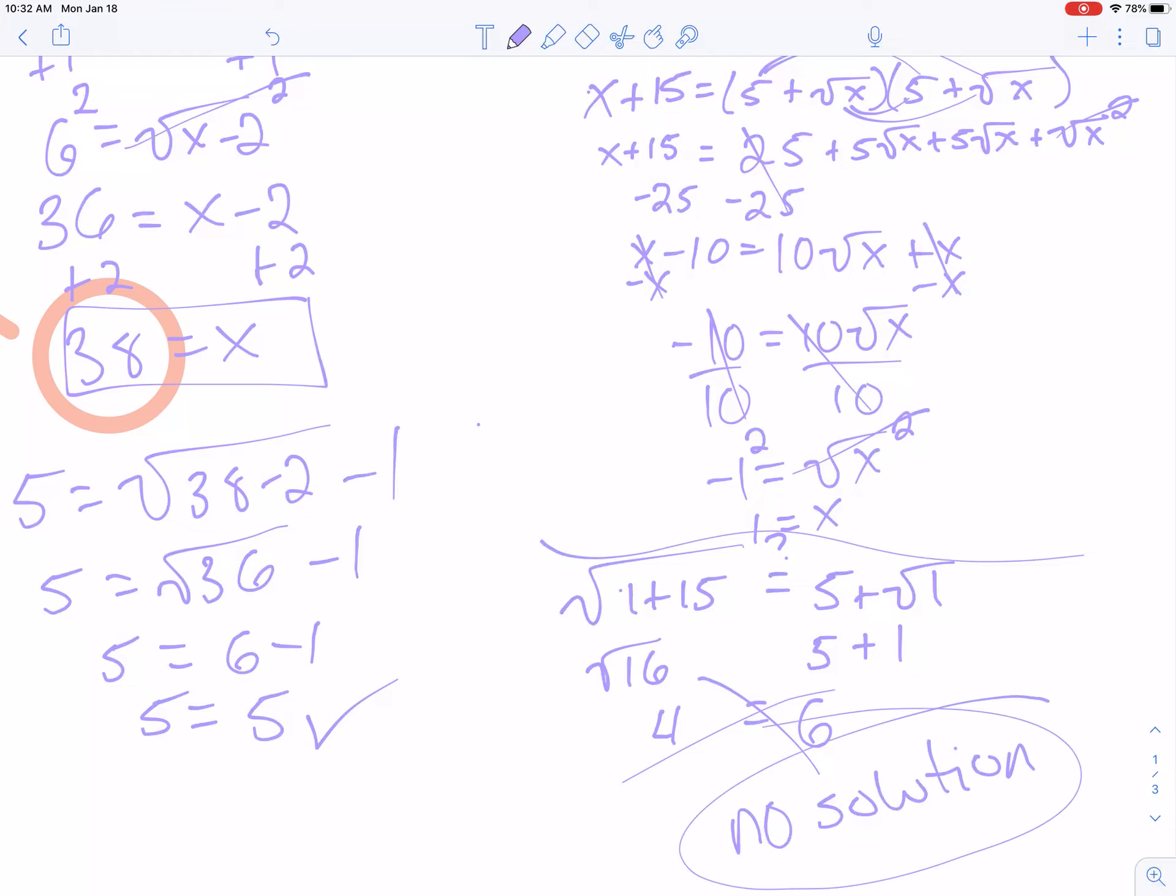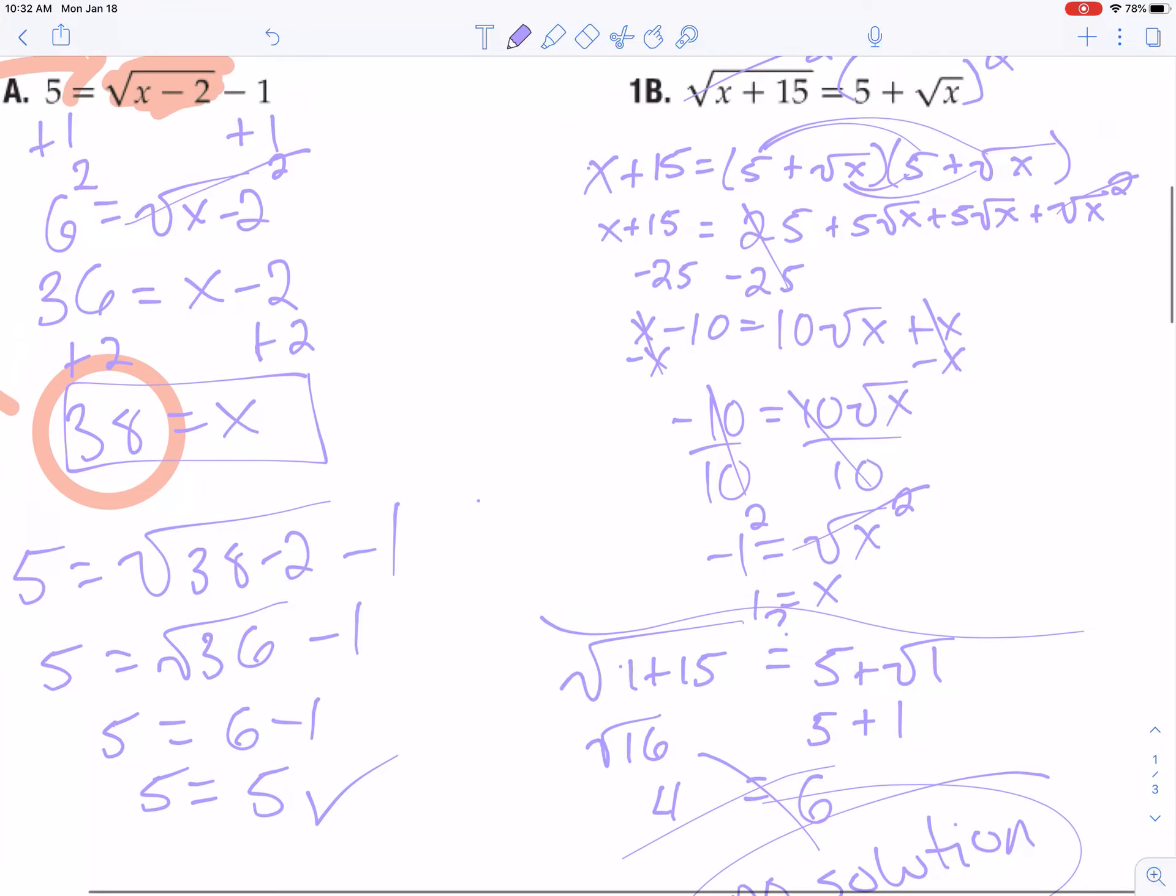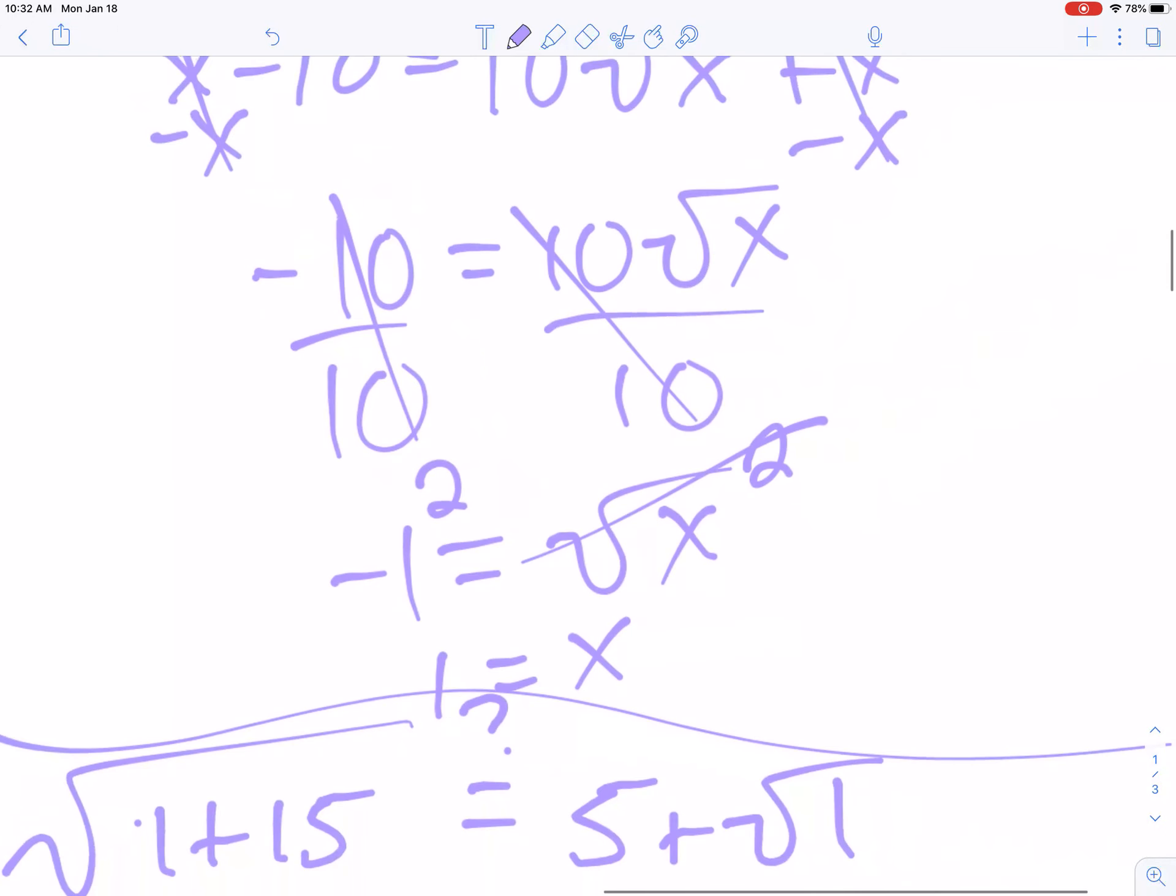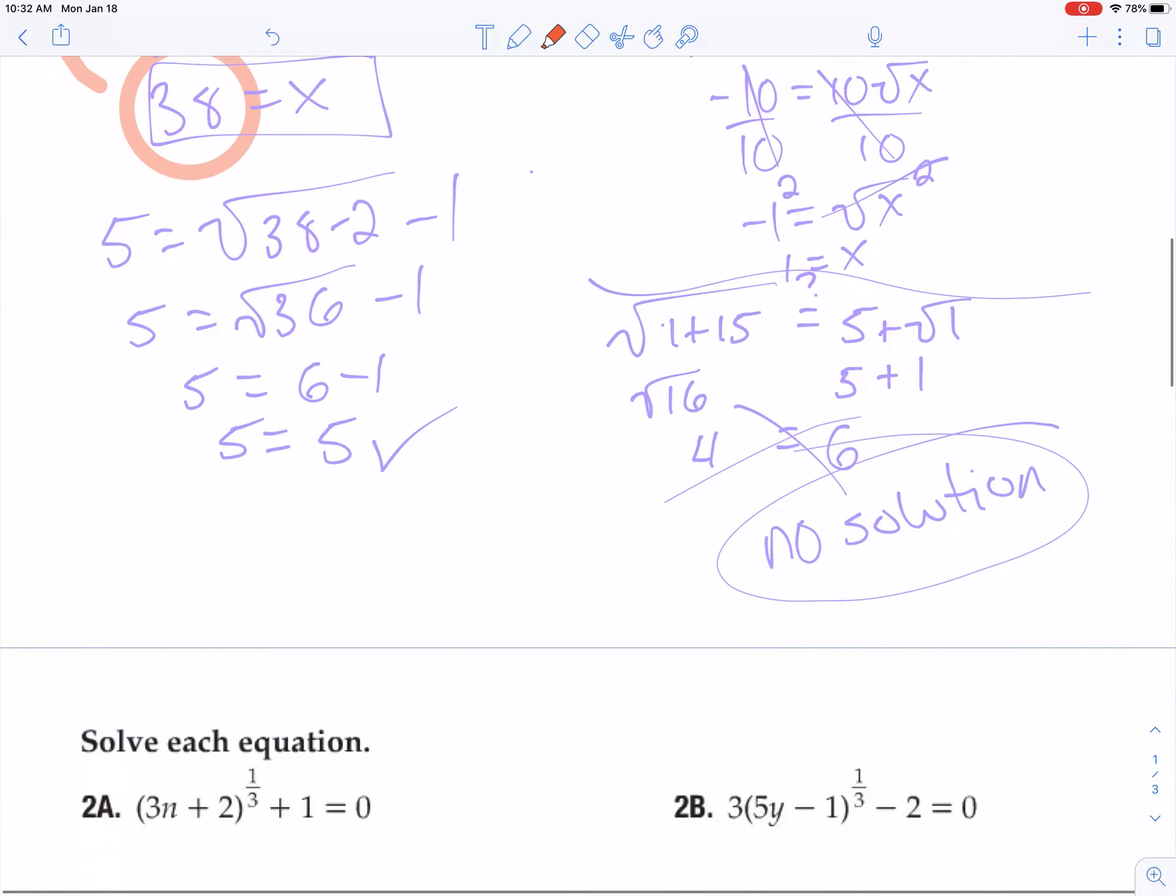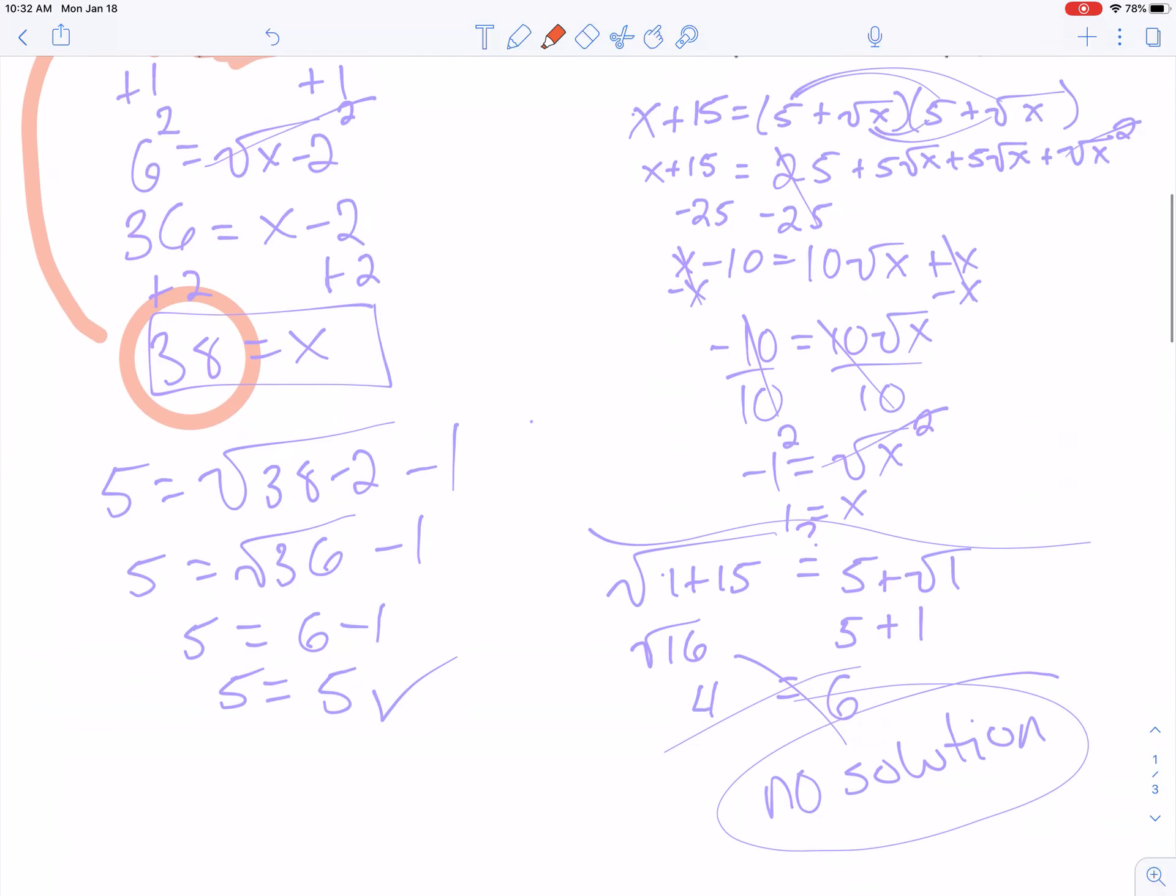Why did this happen? Well look back up at this step right here. See how I had – I divided both sides by 10 and I got a negative 1 is equal to a square root. No matter what a square root I would have ever taken, it can't possibly equal a negative number, not without getting into imaginary numbers. So that's why this one is no solution.